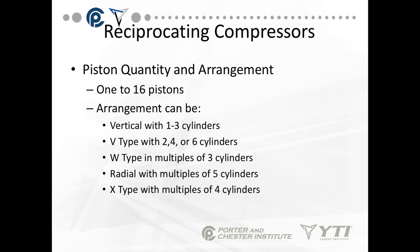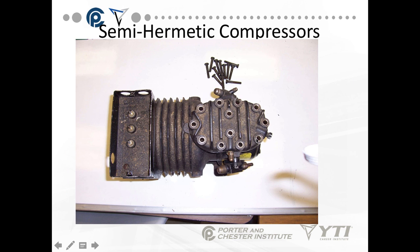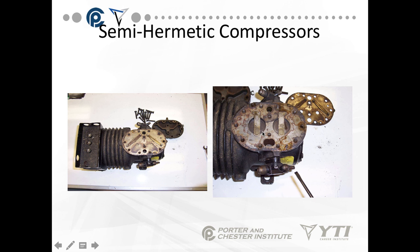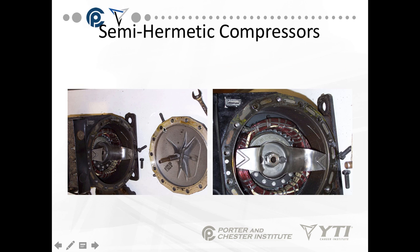Pistons in reciprocating compressors can range from 1 to 16. The arrangement can be vertical with 1 to 3 cylinders, V-type with 2, 4, or 6, W-type in multiples of 3, radials in multiples of 5, or X-type in multiples of 4. This is an example of a semi-hermetic compressor on a shop bench — you'll see it's all bolted together, with start components and wiring connecting over here. Taking the bolts off the cover and popping it off, you can see your valves and pistons. The valves are under the cover. Taking the front off, you can see the end of the motor with a splash-type lubricating system — two blades that circulate down to the bottom, pick up oil, and splash it across the bearings.